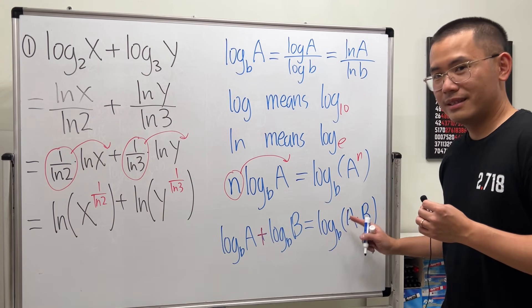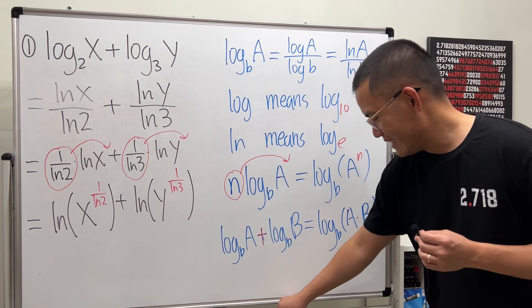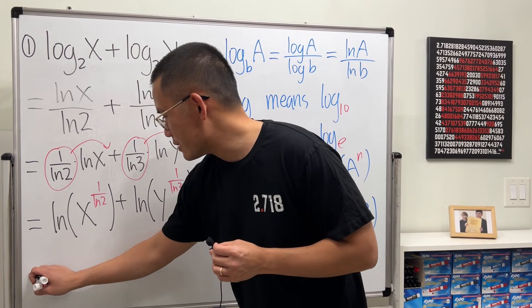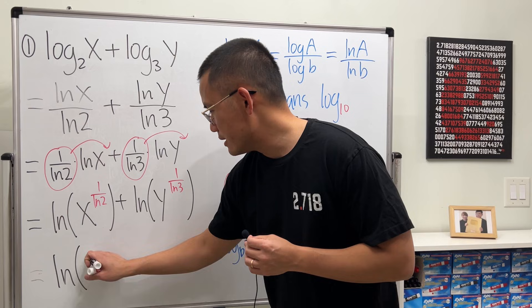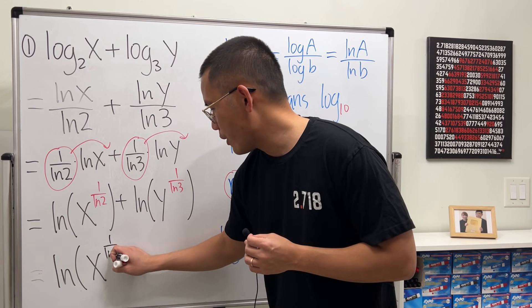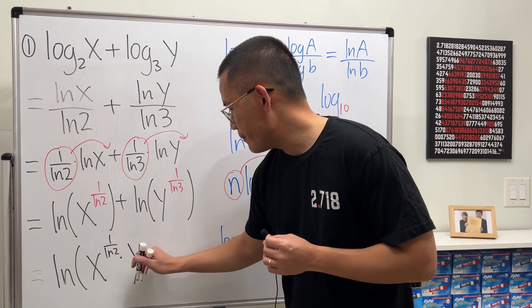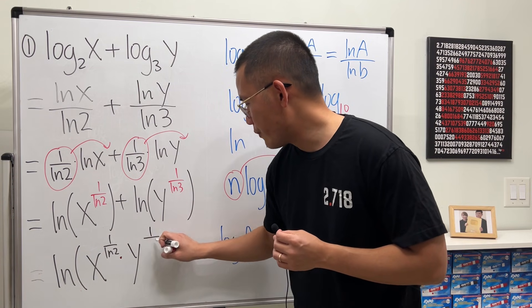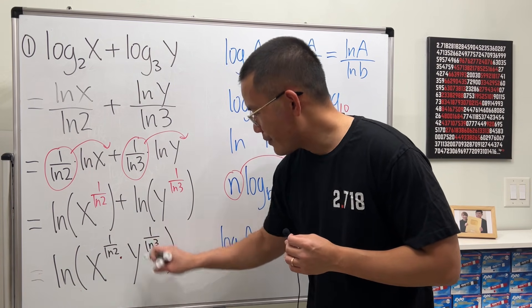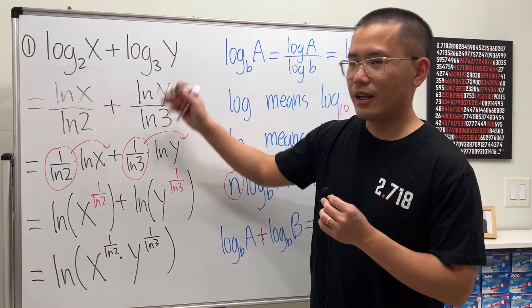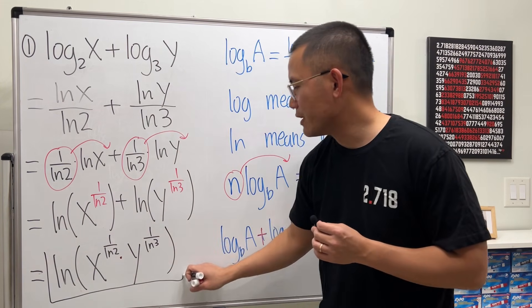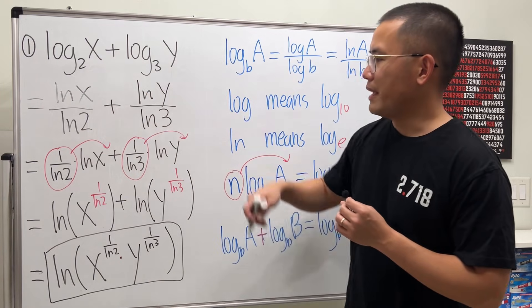So we can just say this is equal to ln of x to the 1 over ln 2 power times y raised to the 1 over ln 3 power. So as you can see, we just combined this logarithm, even though they didn't have the same base at first.